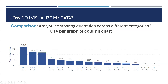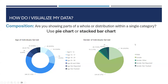For comparison — if you're comparing quantities across different categories — you want to use a bar graph or a column chart. This column chart shows subrecipient data from FY23, displaying the victims served in different counties. If you're looking at composition — showing parts of a whole or distribution within a single category — use a pie chart or a stacked bar chart. Stacked bar charts are great. Pie charts work well for showing the percentage of victims served that were male, female, or by age group. There's a standard pie chart and also a donut chart.